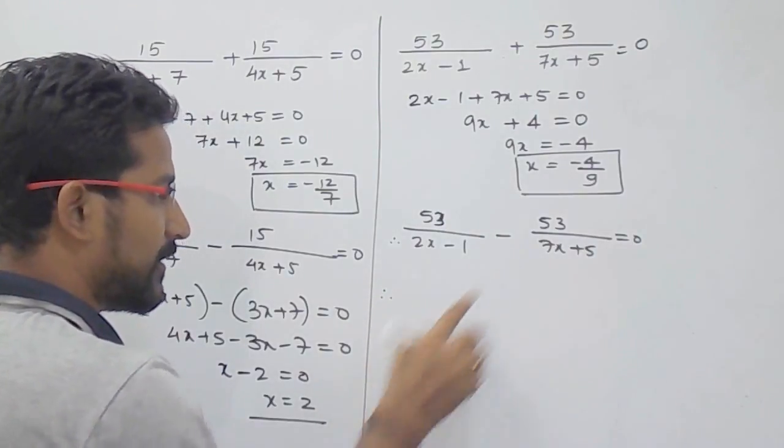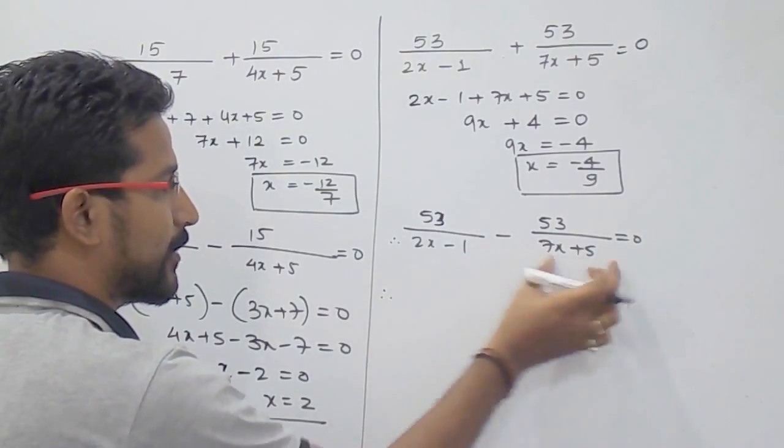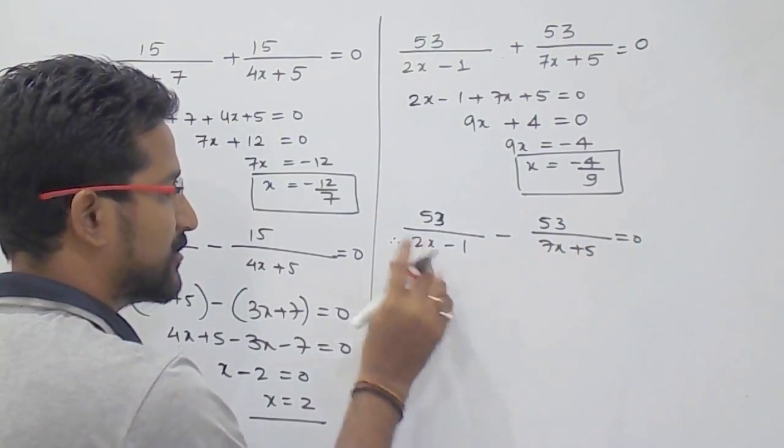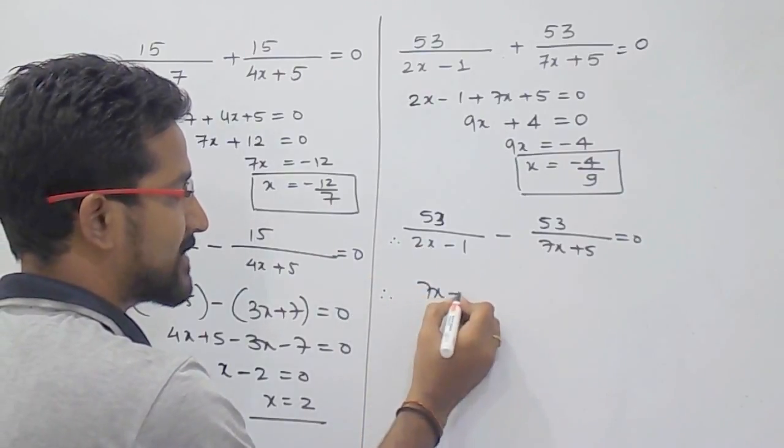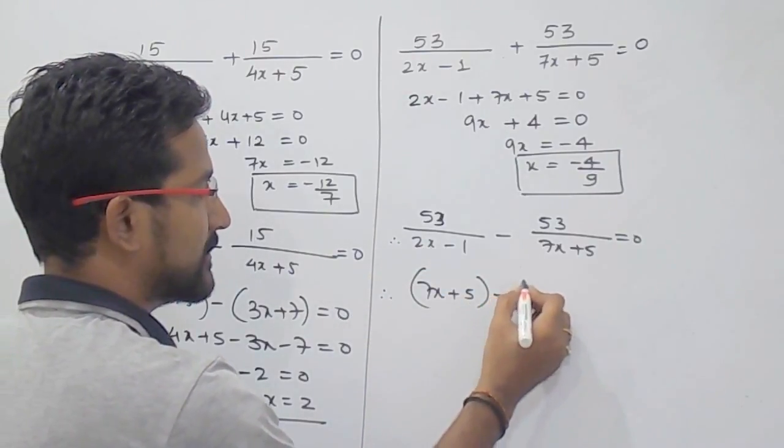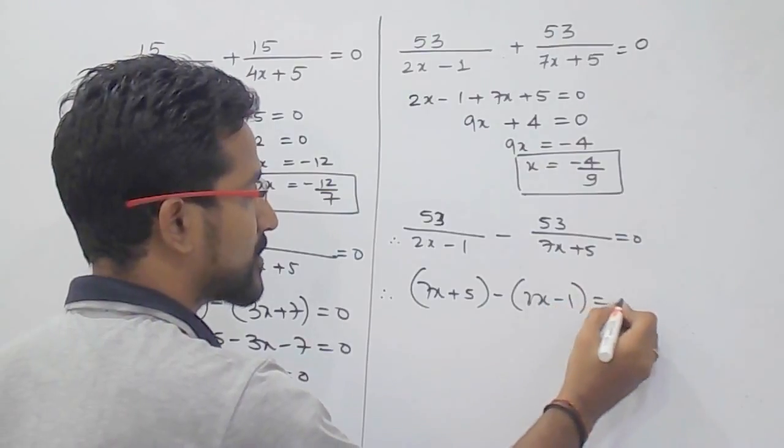Now again what you have to do? Subtract the denominator. That is from this you have to subtract this. So that is 7x plus 5 minus 2x minus 1 equals 0.